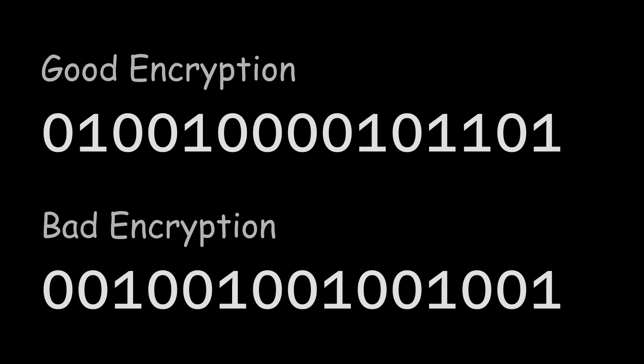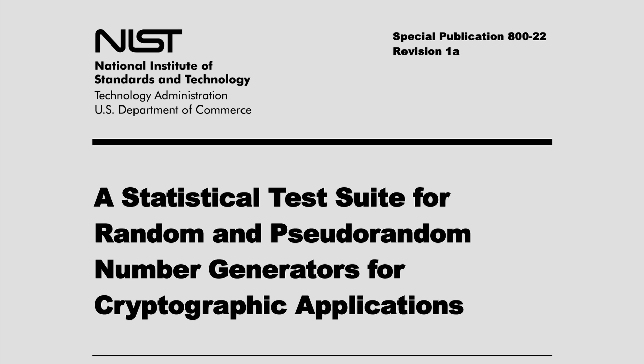An important property of encrypted data is that there are no predictable patterns in the zeros and ones. In other words, the zeros and ones should seem random. This is why NIST wrote this 131-page paper.